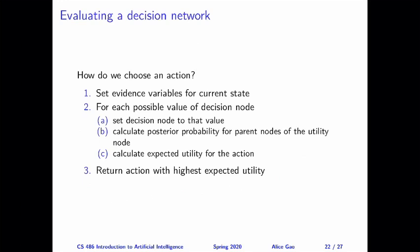Let's look at a general procedure to choose an action given a decision network. This is an extension of the inference algorithm we did with the Bayesian network, so many things will be similar to the variable elimination algorithm. First, if we have any evidence variables — random variables for which we observe their values — we should set them to the observed values.